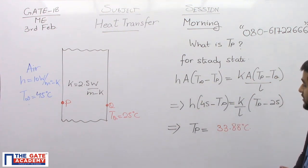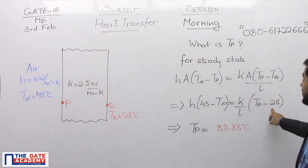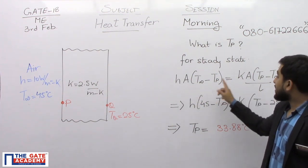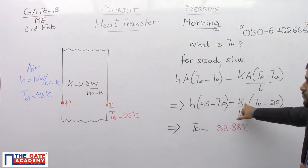In this we know what is T infinite. It is 45 degree Celsius. We know what is TQ. It is 25 degree Celsius. A and A will cancel out. H value in SI is 10. K value in SI is 2.5.